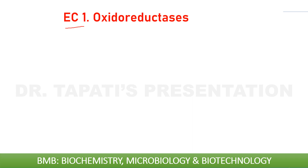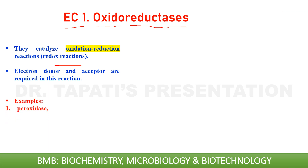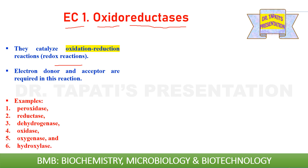The first class of enzymes is EC1, oxidoreductases. 'Oxido' is for oxidation and 'reductases' is for reduction, so this enzyme class catalyzes oxidation-reduction reactions, also called redox reactions. In redox reactions, an electron donor and acceptor are required. Examples include different types of peroxidases, reductases, dehydrogenases, oxidases, oxygenases, and hydroxylases. A redox reaction is a chemical reaction in which reduction and oxidation occur simultaneously — the reduced species receives electrons whereas the oxidized species loses electrons.